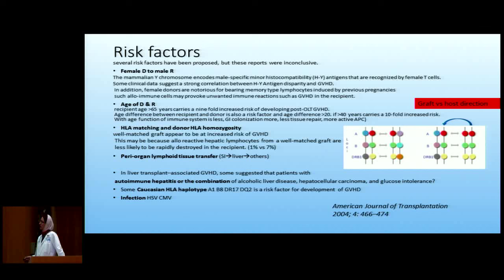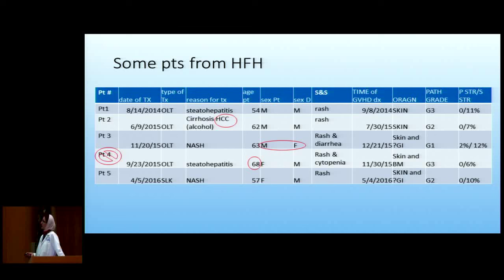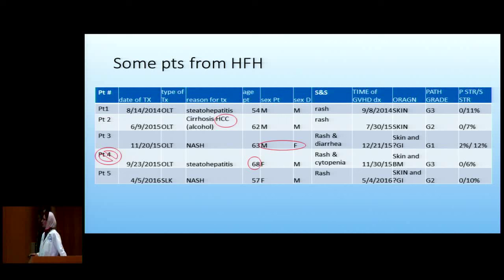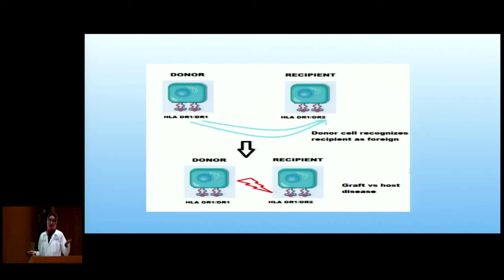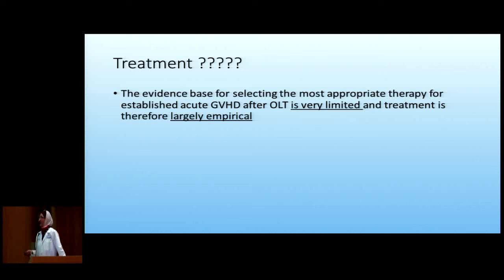Looking at a case example: this patient had alcohol-related disease with HCC — likely immunosuppressed, was a female-to-male transplant, the female was older, and she had skin and bone marrow involvement and died, partly due to late diagnosis of GVHD. Four of five cases had homozygous HLA typing, and case five had the common Caucasian HLA haplotype — so most had at least the mentioned risk factors.